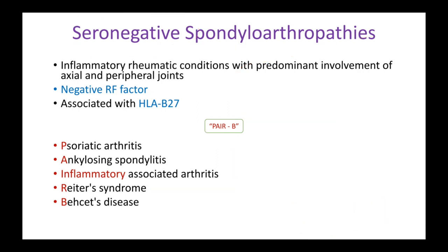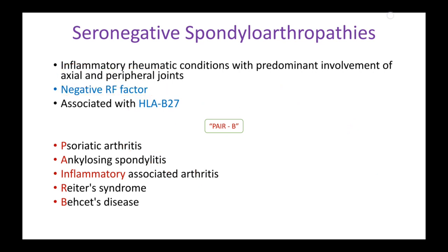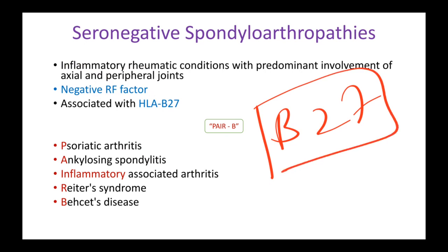Spondyloarthropathies are inflammatory rheumatic conditions — you can see all the '-itis' endings — with predominant involvement of axial and peripheral joints. Peripheral means your fingers, metacarpophalangeals, metatarsophalangeals, and axial includes your bigger joints like knee and ankle. These conditions are associated with negative RF and are linked to HLA-B27. Always remember HLA-B27 is associated with seronegative spondyloarthropathies.